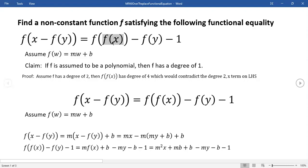So you would have a degree four x term. An x term with power four on this side, you would only have an x term power squared.